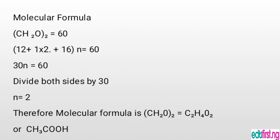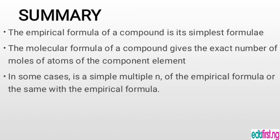Once we find n = 2, we insert 2 into the empirical formula and we get the molecular formula: C₂H₄O₂, which can also be written as CH₃COOH. It is a hydrocarbon — actually it is called ethanoic acid. You can leave your answer in the first form C₂H₄O₂, but if you are conversant with chemical compounds, you would know that this is ethanoic acid.